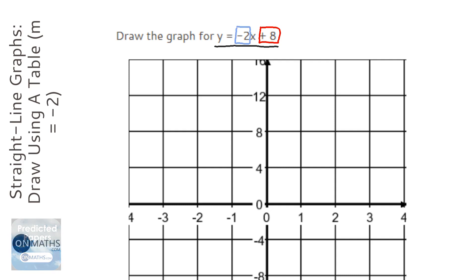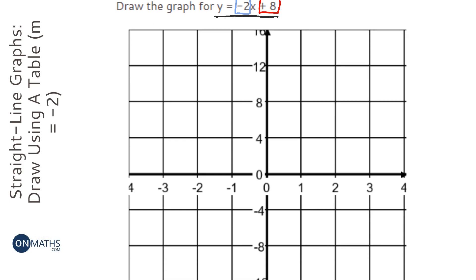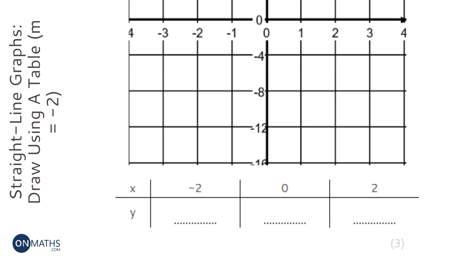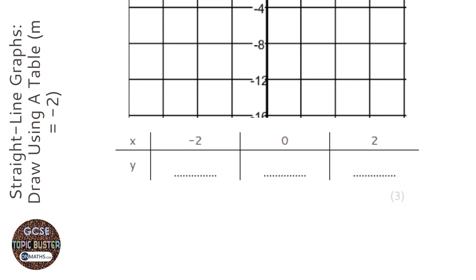So go across one and down two, and then right one, another down two. Or you could just find values. So we've got three values there. It's minus 2x plus 8.